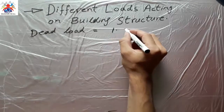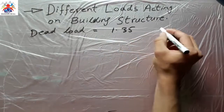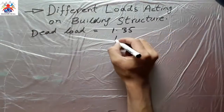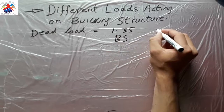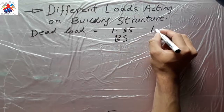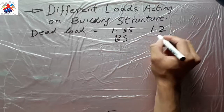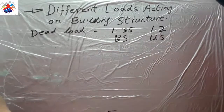The factor of safety for the dead load in British standard is 1.35, and in US standard it is 1.2.